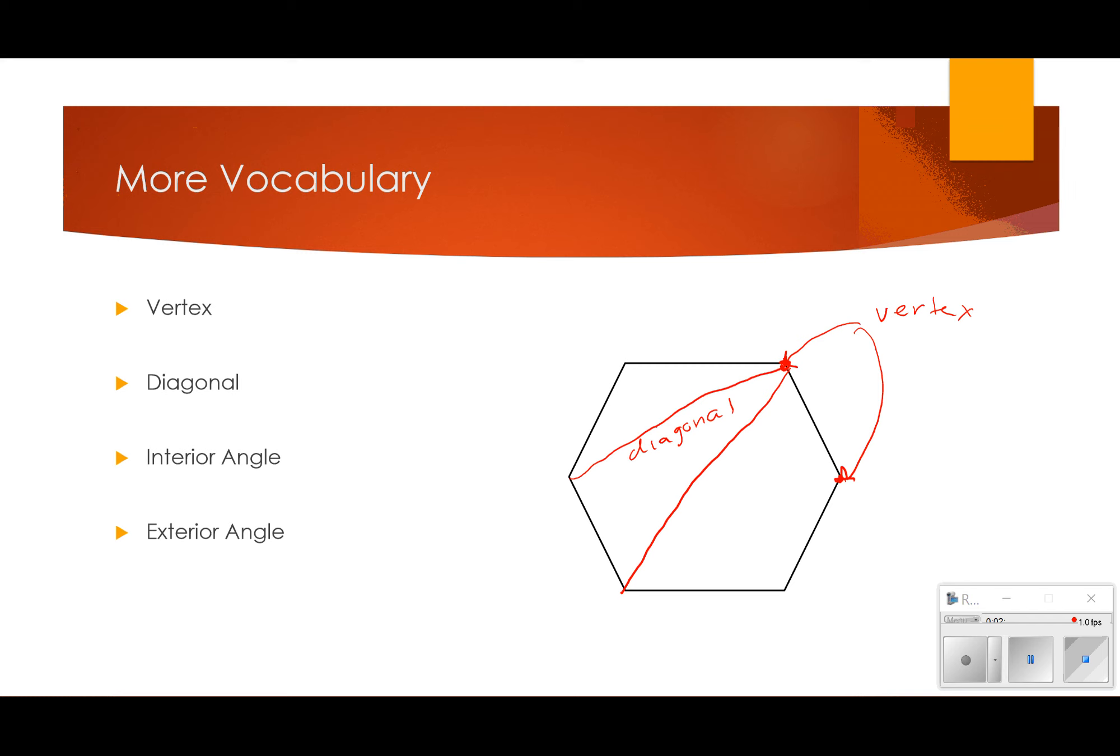An interior angle would be angles inside the polygon. So like the interior angles of a triangle are inside, so are the polygons. So that's your interior angle. And then your exterior, we extend a side. And the angle formed between the side and the extension of the other side is your exterior, just like in a triangle.